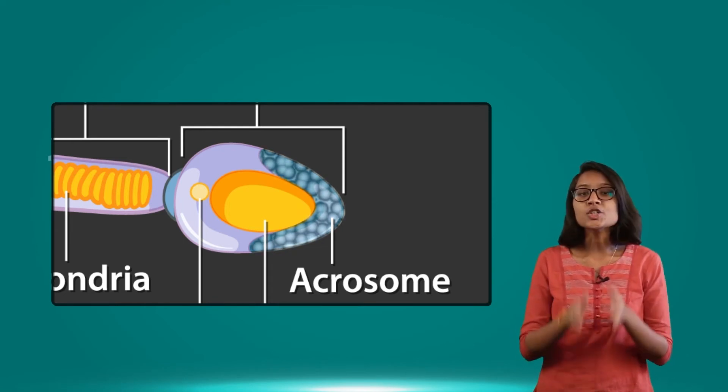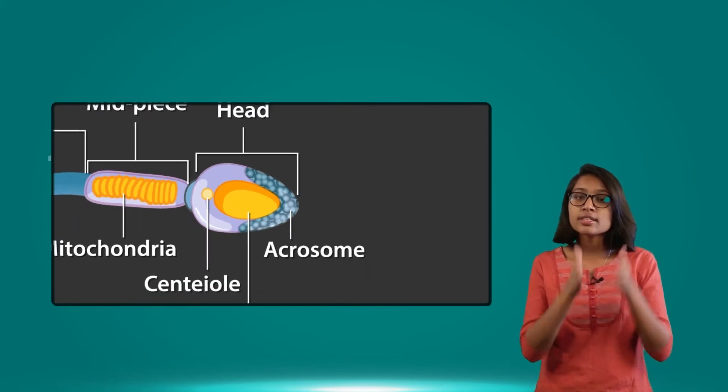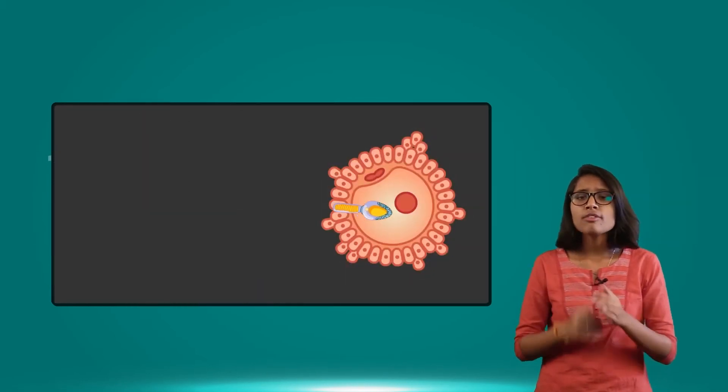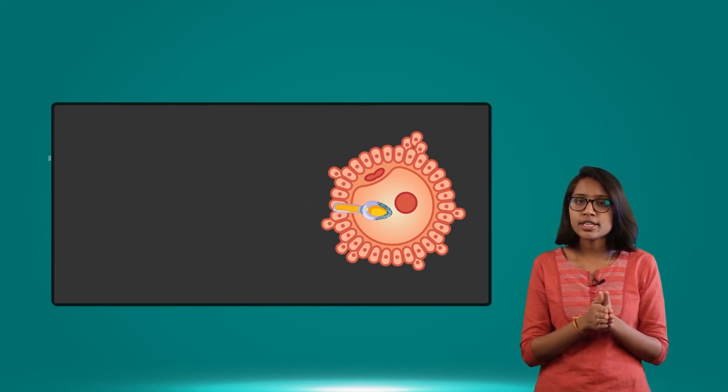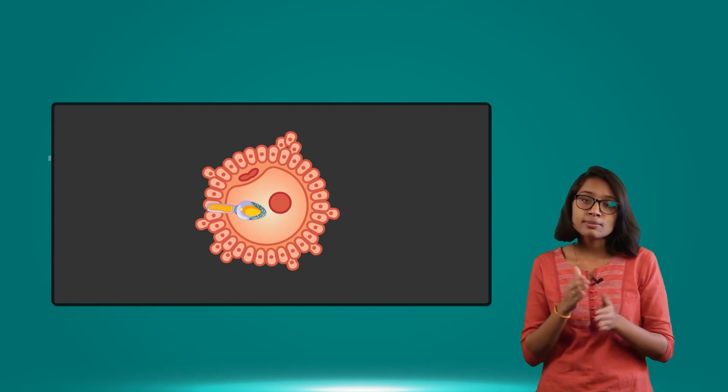The enzymes present in the acrosome help the sperm enter the ovum. Why do we need these enzymes? Why can't it enter directly? Because when you observe the structure of the ovum...